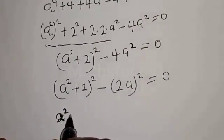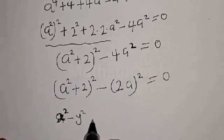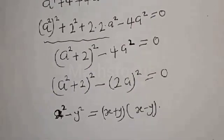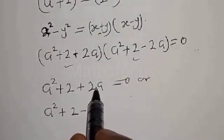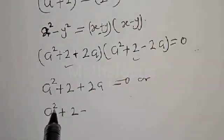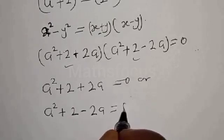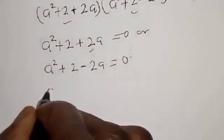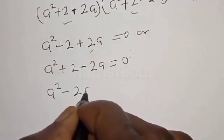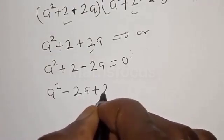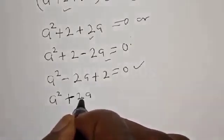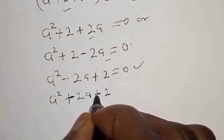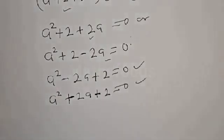Using the difference of squares identity, s² minus y² factors as (s+y)(s-y). Our equation becomes (a² + 2 + 2a)(a² + 2 - 2a) equal to 0. Rearranging, we get two quadratic equations: a² minus 2a plus 2 equals 0, and a² plus 2a plus 2 equals 0.